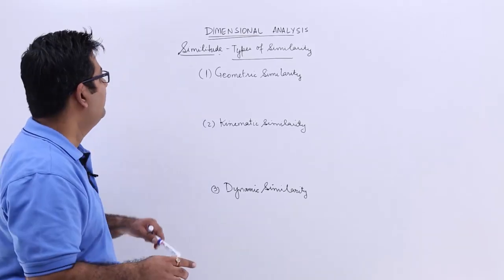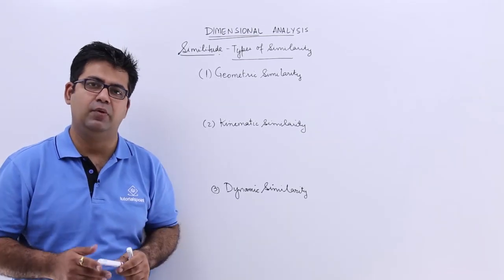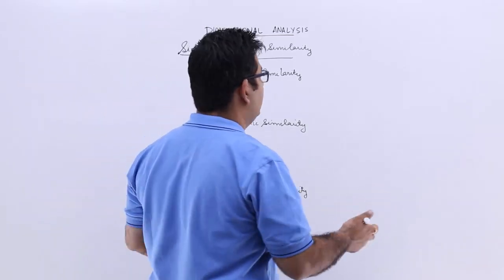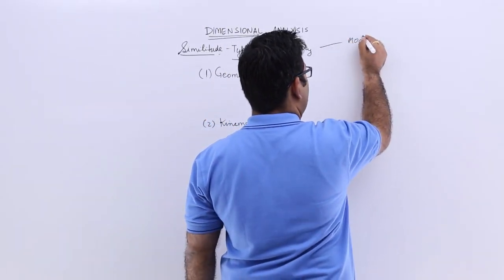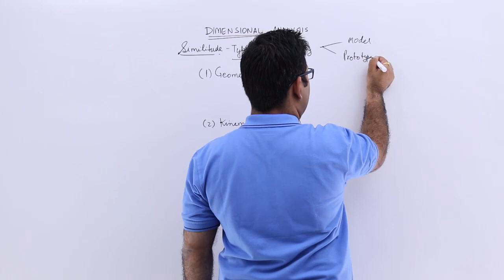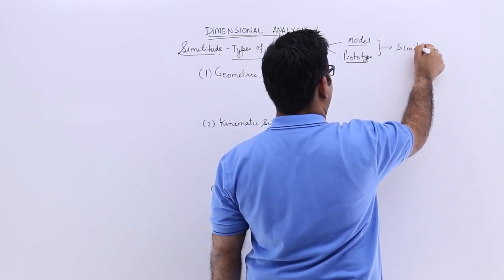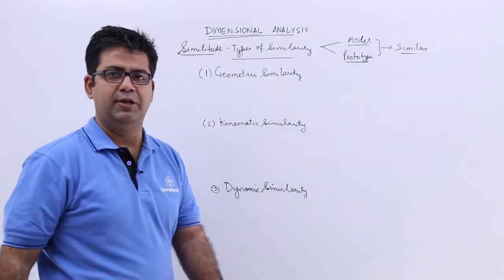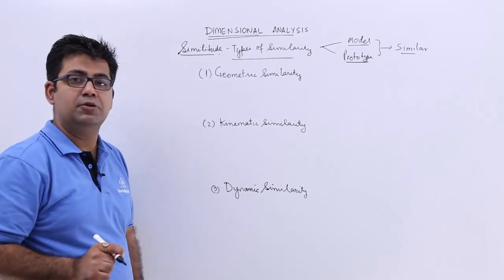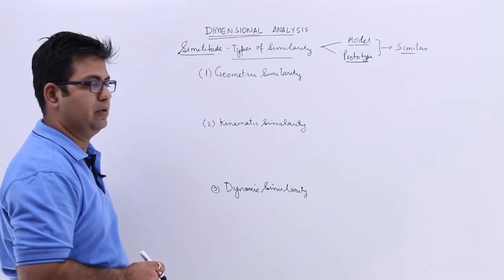Now let's look at the topic of similitude or types of similarity. When we design a particular object or product, we build a model and then we have a prototype. So the prototype and the model should be similar in all respects. They should be similar geometrically, they should have kinematic similarity, and they should have dynamic similarity. We will discuss these three similarities one by one.